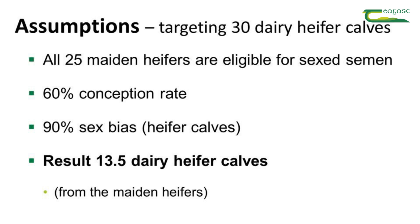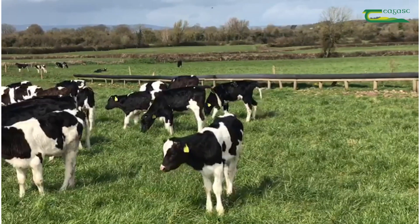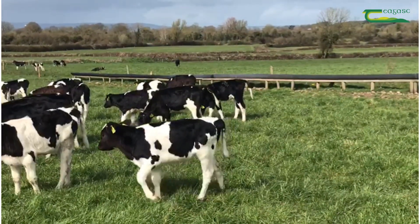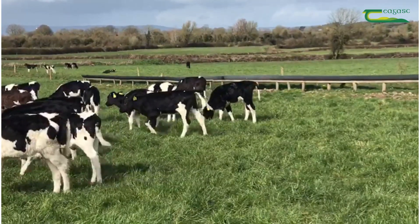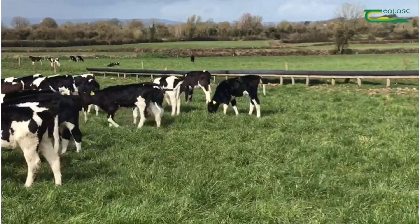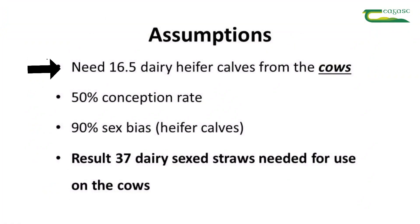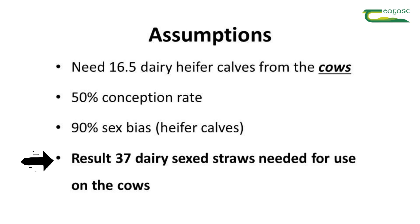The question then is: how many cows do I need to AI with dairy sex semen? We want 30 female calves, and we've got 13.5 from heifers, meaning we need 16.5 female calves from the lactating cow herd. At 50% conception rate and 90% sex bias, that calculation means we need to use 37 dairy sex semen straws on cows.